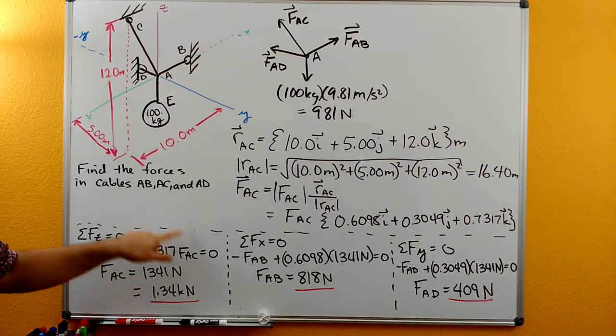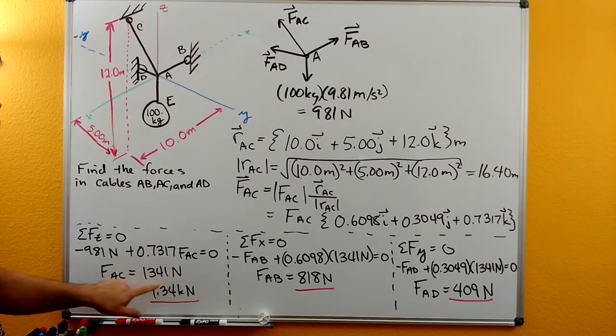Those two added together have to equal zero since this is an equilibrium. We now have one linear equation with one unknown FAC and we can solve for FAC. We get 1341 newtons